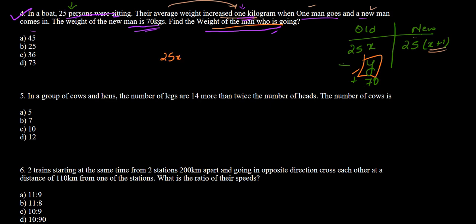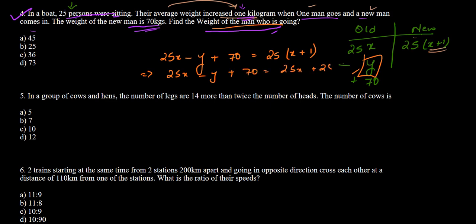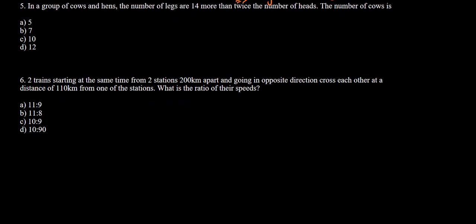Setting the two expressions equal: 25x minus y plus 70 equals 25(x+1), which is 25x plus 25. The 25x cancels from both sides, leaving y equal to 70 minus 25, which is 45. So the weight of the man who left is 45 kg. Option A says 45, so option A is the correct answer. Moving on to question number 5.